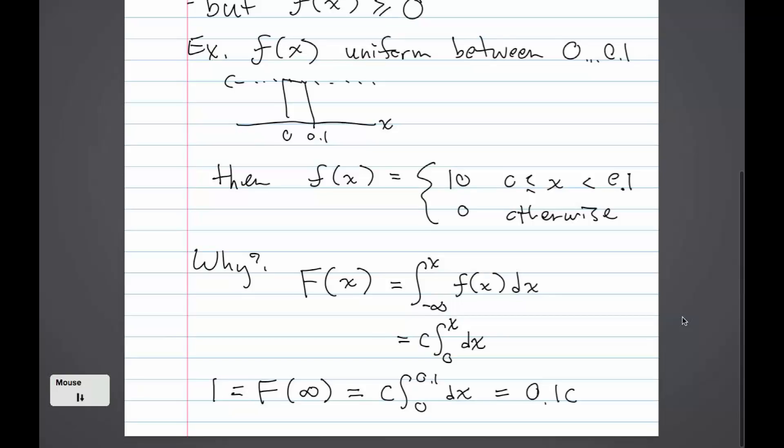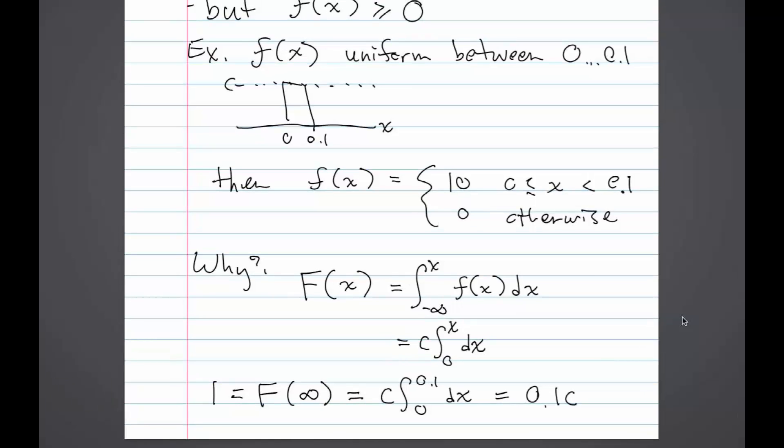Now I'm going to claim that little f of x has to equal 10 if x is between 0 and 0.1 and 0 otherwise. Why is this?